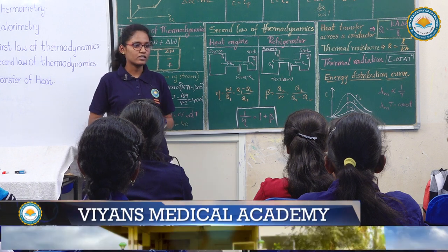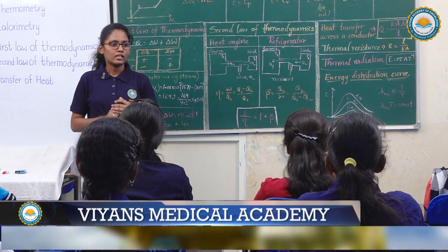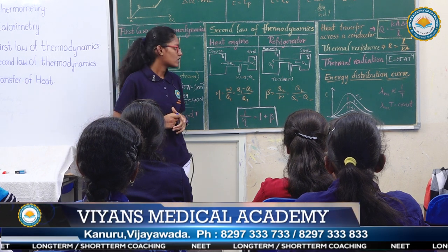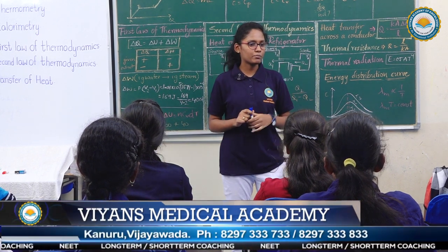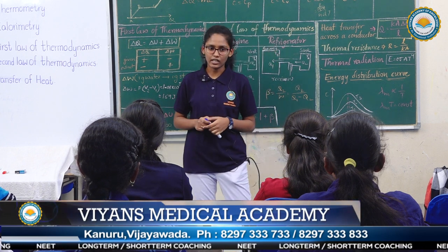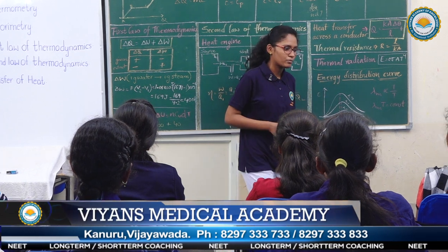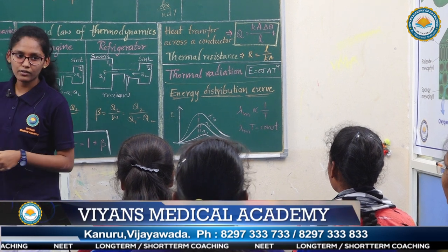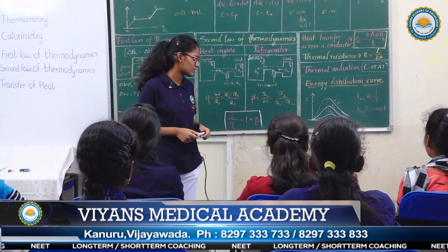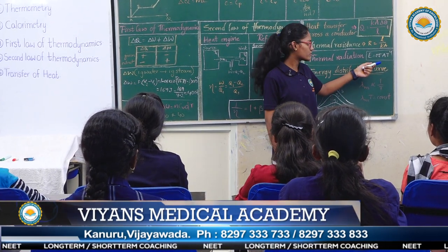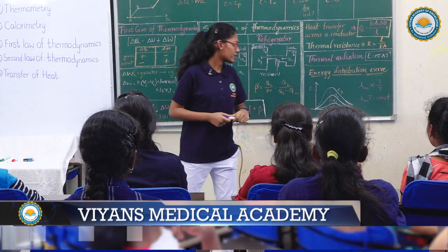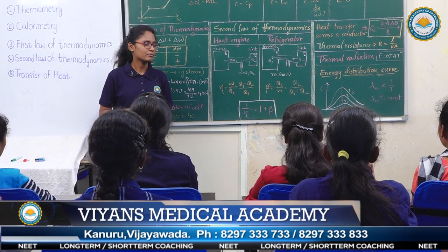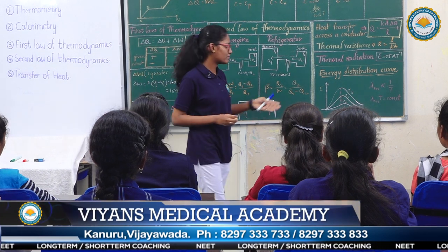Let us move on to radiation. Radiation is also a process of heat transfer in which no medium is required. When radiation occurs due to virtue of temperature, it is called thermal radiation. Thermal radiation is an electromagnetic wave. Thermal radiation emitted by an object per unit area per unit second is given by E = ε σ A T^4. Thermal radiation emitted by every object is directly proportional to the 4th power of its temperature.